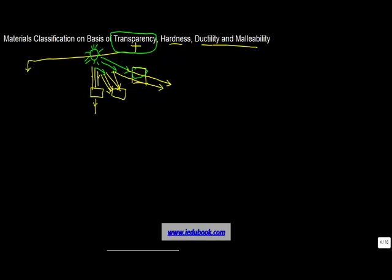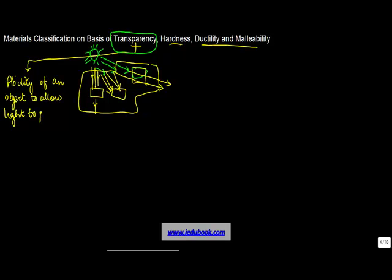And then there are some other objects which allow, let's say if three rays come in, they will allow one to pass through while the other two may not. So transparency is basically the ability of an object to allow light to pass through it. On this basis, objects can be classified as transparent,